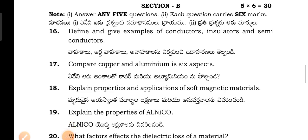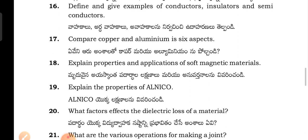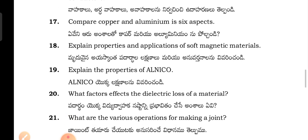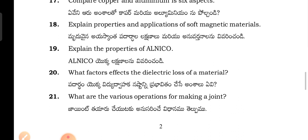Define and give examples of conductors, insulators, and semiconductors. Compare copper and aluminum in six aspects. Explain the properties and applications of soft magnetic materials — mrudwan ice kandha padardhala lakshanali amare anavathana.